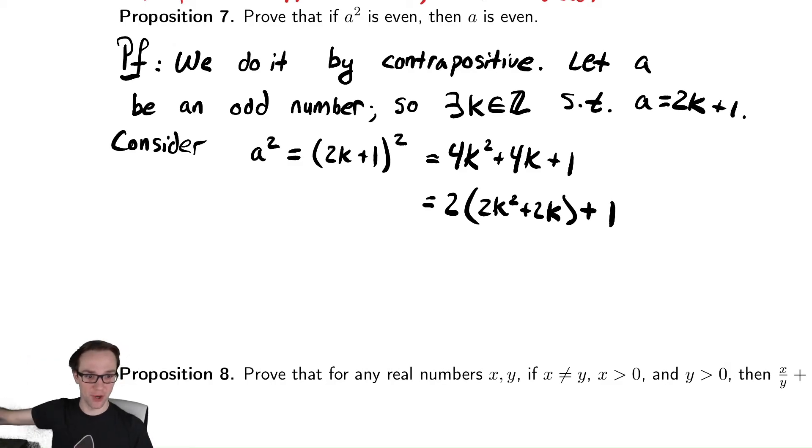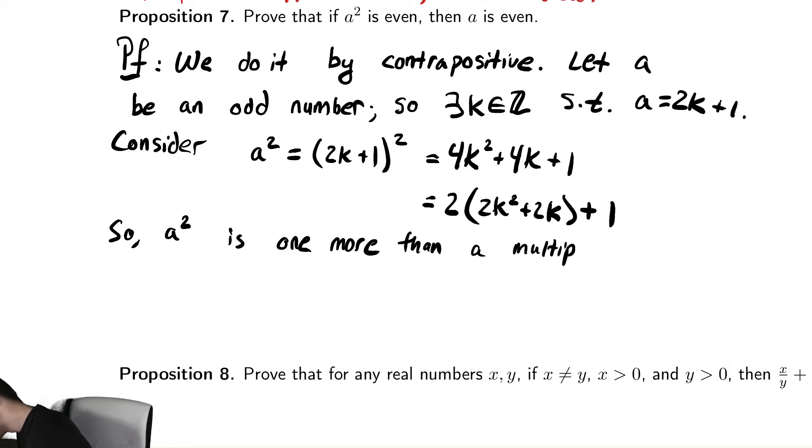Therefore, it is 1 more than a multiple of 2, so it must be odd. So A squared is 1 more than a multiple of 2, and thus must be odd.